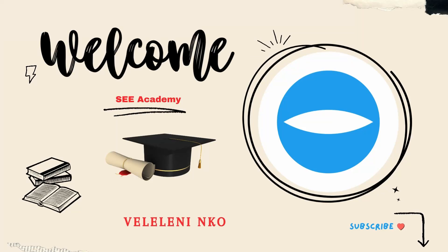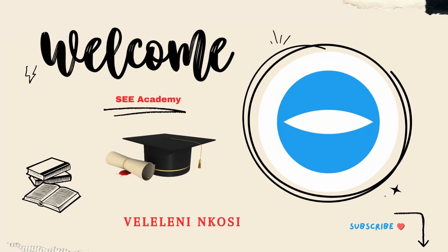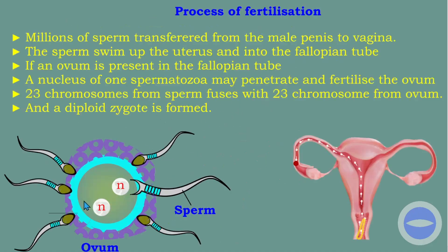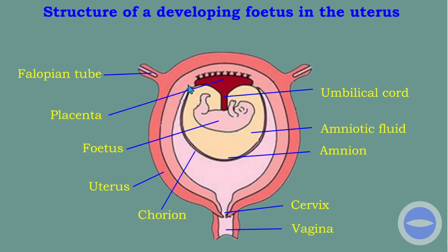Hello everyone. Welcome to C Academy YouTube channel. My name is Velenin Ngozi. In today's lesson we discuss women reproduction. We will be focusing on fertilization and implantation. I will show you all the processes that are taking place from when the ovum is fertilized until the implantation of the blastocyst.